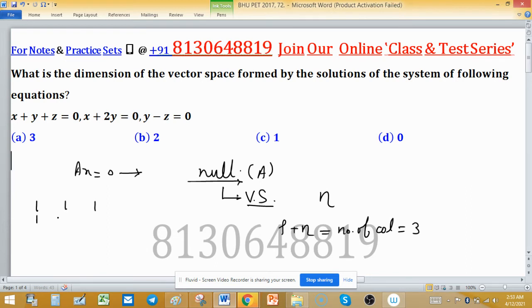The matrix is [1,1,1; 1,2,0; 0,1,-1]. Find the rank of this matrix and then use this formula, the rank-nullity theorem.